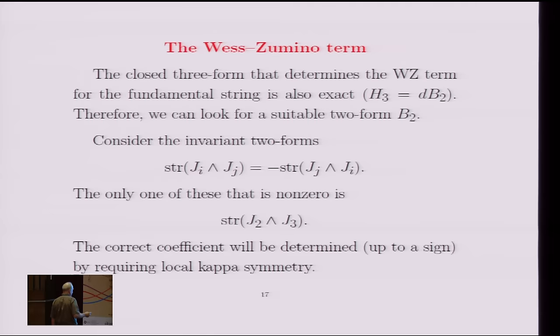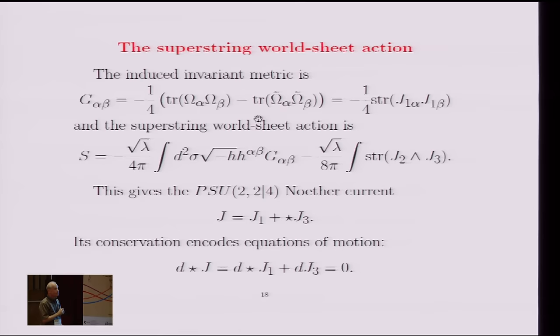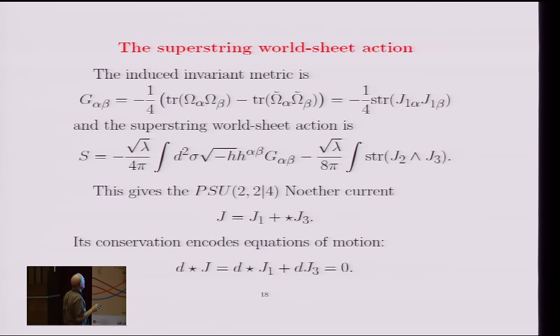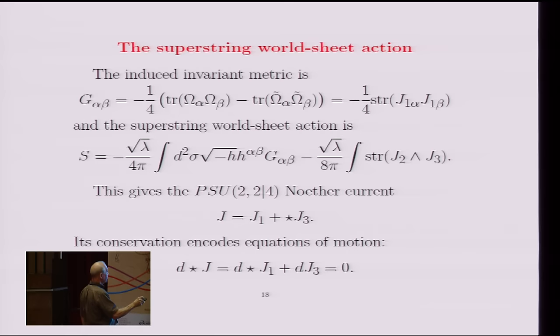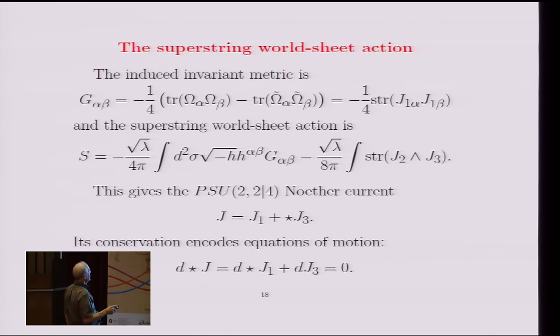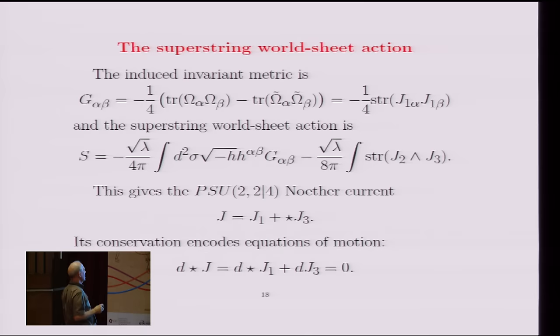So the world sheet action of the superstring, then, is so here's the induced metric I showed you earlier, which can be written in terms of this current or one-form I call J1. And so that gives you this term in the action. And then the Wess-Zumino term is what I just showed you. And then this is the correct coefficient that's required to get the kappa symmetry.